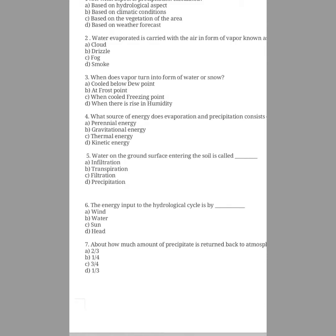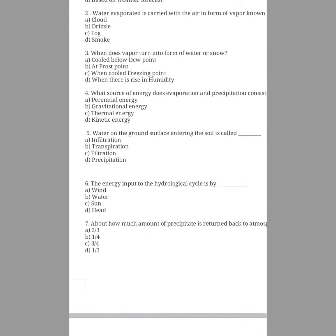Question number six: what is the energy input to the hydrological cycle? The options are wind, water, sun, heat. The answer is option C, sun, because the energy input to the hydrological cycle is the sun. Due to the sun, water evaporates from water bodies. On cooling, the vapours form clouds which fall down in the form of rain, snow, or hail — this is known as precipitation.